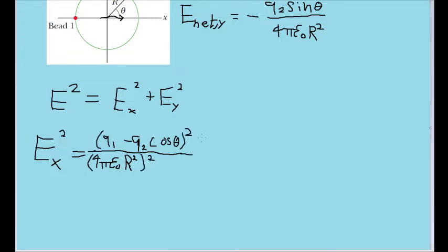Since the numerator here is made up of two terms, we'll have to use the FOIL, or first, inner, outer, last method of expansion. After expanding the binomial, this gives us a numerator of q1 squared minus 2 times q1 times q2 times the cosine of theta plus q2 squared times the square of cosine of theta. Yikes.